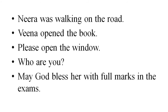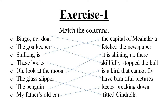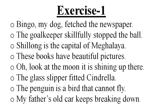Now let's understand sentences more clearly by understanding and solving some exercises. In the first exercise, you have to match the columns. Here is given column A and column B. By matching the columns, you will be able to understand the topic and complete the sentences. The sentences are given on the screen. And here are the answers: Bingo, my dog, fetched the newspaper. The goalkeeper skillfully stopped the ball. Shillong is the capital of Meghalaya. These books have beautiful pictures. The glass slipper fitted Cinderella. The penguin is a bird that cannot fly. My father's old car keeps breaking down. Now you may see the sentences on the screen.